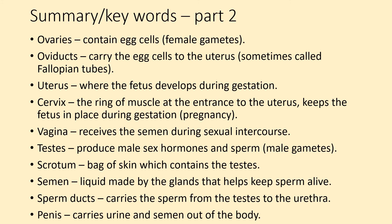Summary part two. The ovaries contain egg cells, the female gametes. Oviducts carry the egg cells to the uterus and are sometimes called fallopian tubes. The uterus is where the fetus develops during gestation. The cervix is the ring of muscle at the entrance to the uterus and keeps the fetus in place during gestation, which we also call pregnancy in humans. The vagina receives semen during sexual intercourse. The testes produce male sex hormones and sperm. The scrotum is the bag of skin containing the testes. Semen is the liquid made by the glands that helps keep sperm alive. Sperm ducts carry sperm from the testes to the urethra. The penis carries urine and semen out of the body.